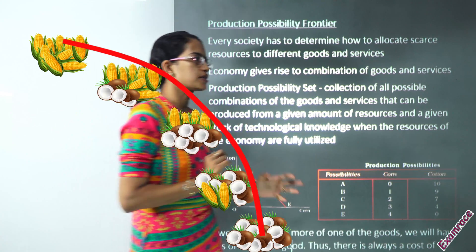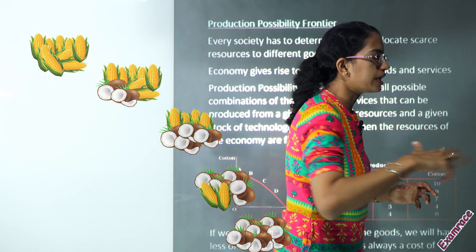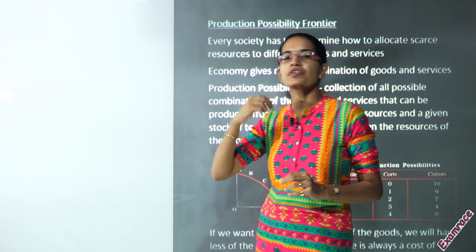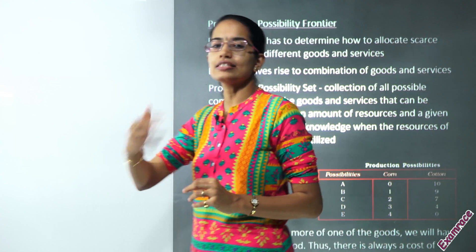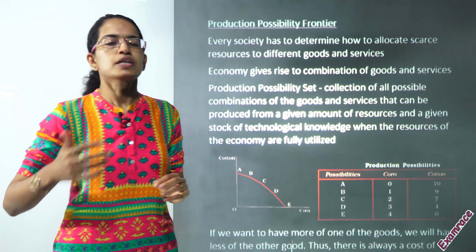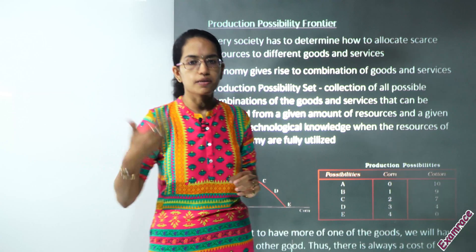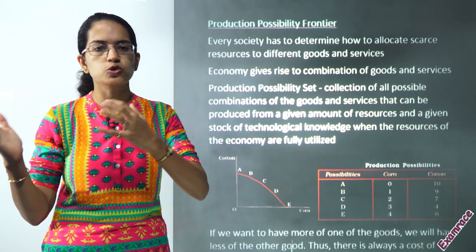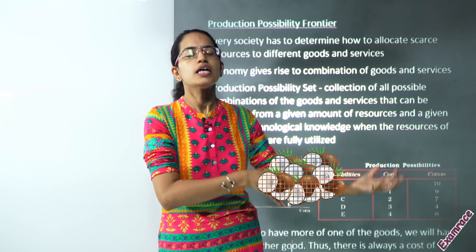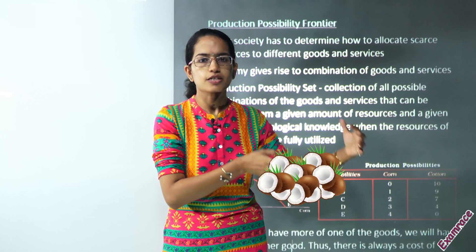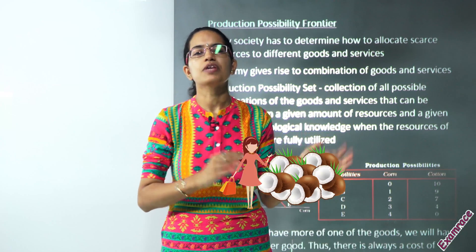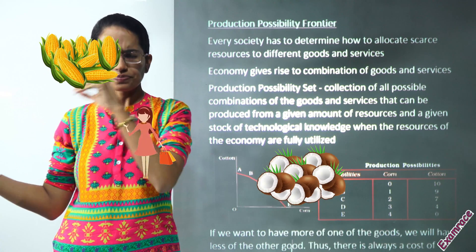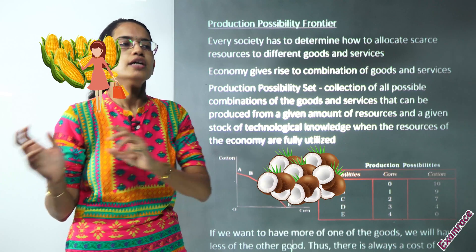This production possibility curve is very important to understand the pattern of demand and supply that runs in the market. Based on the demand that's there, I would decide what to produce. If there is more demand for coconut I would go for production of coconut, and if there is more demand for corn I would go for the production of corn.